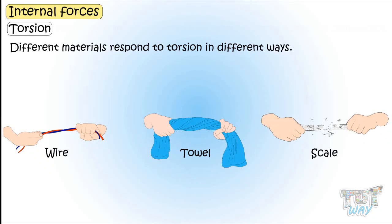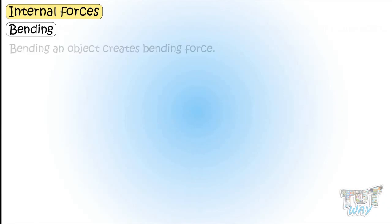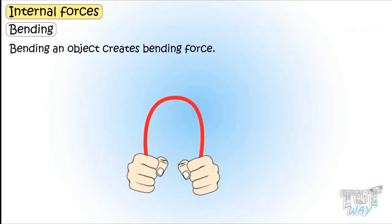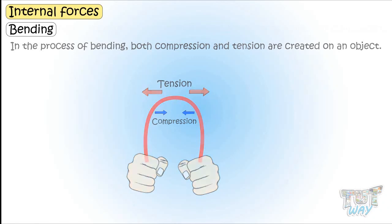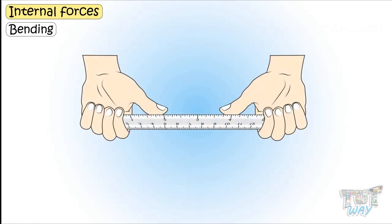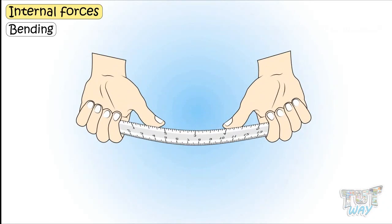Now let's learn about another type of internal force, and it's bending. Bending an object creates bending force. In the process of bending, both compression and tension are created on an object. If you bend a scale or an object, the side which is elongated develops tension, and the side which is getting compressed develops compression.